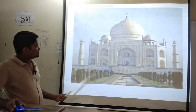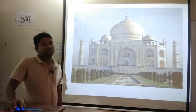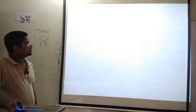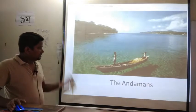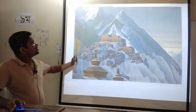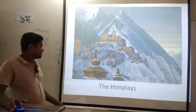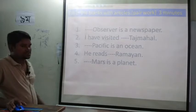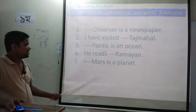This is the picture of the Taj Mahal. Important buildings or important constructions take THE as their article. This is the picture of the Andamans — a group of islands, and groups of islands take THE. This is the picture of the Himalayas — a group of mountains, so names of mountain ranges take THE. Exercise: The Observer is a newspaper. I have visited the Taj Mahal. The Pacific is an ocean. The Moon is a planet.